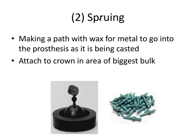The second step is spruing. This involves making a path with wax for the metal to go into the prosthesis as it's being created. These are pre-made wax sprues, and you want to attach the sprue to a base and then attach it to the crown in the area of biggest bulk — usually at a cusp or incisal edge.